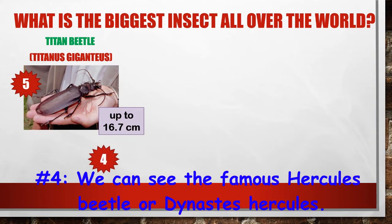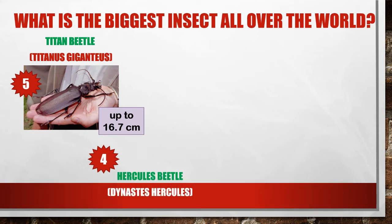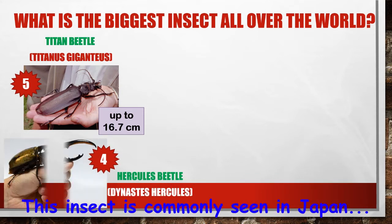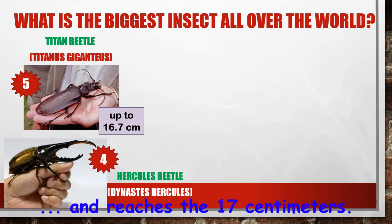At number four, we can see the famous Hercules Beetle, or Dynastes hercules. This insect is commonly seen in Japan and reaches 17 centimeters.